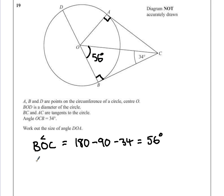That also tells us that angle AOC is also 56 degrees. Because AOBC creates a kite, both of these angles have to be identical.